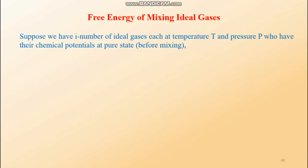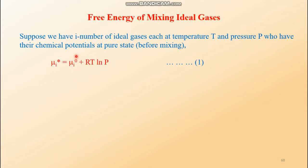Suppose we have i number of ideal gases, each at temperature T and pressure P. Their chemical potentials in the pure state before mixing are μᵢ* = μᵢ⁰ + RT ln P. This is the common expression for the chemical potential of any ith component of gas before mixing, when it was at pure state. The asterisk sign indicates the pure state of that particular substance. μᵢ⁰ is its standard chemical potential at temperature T and pressure P.